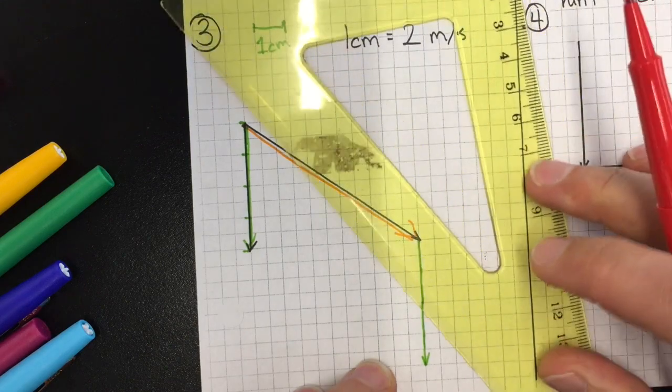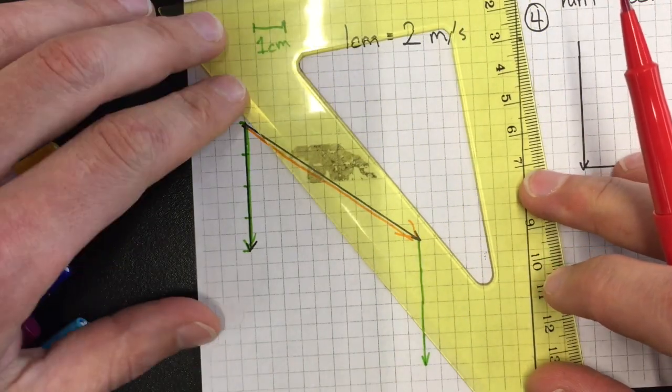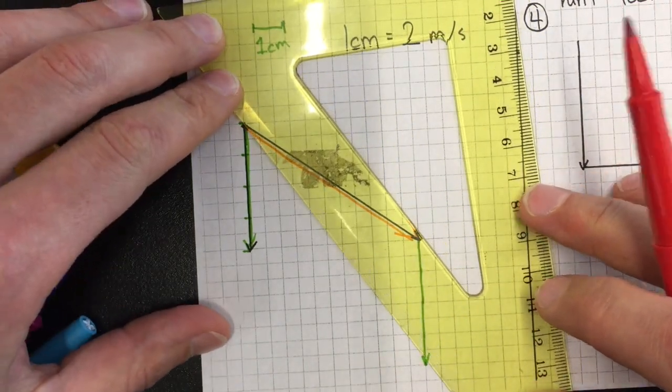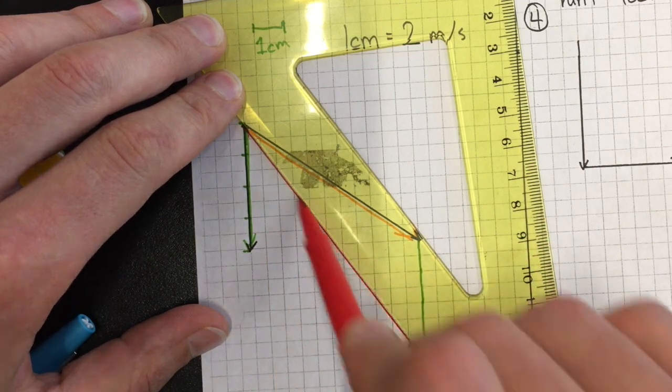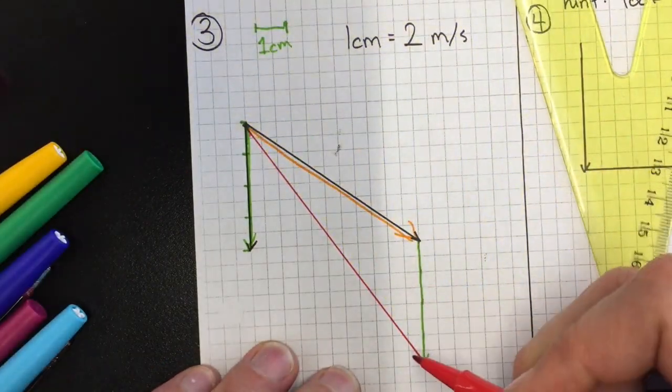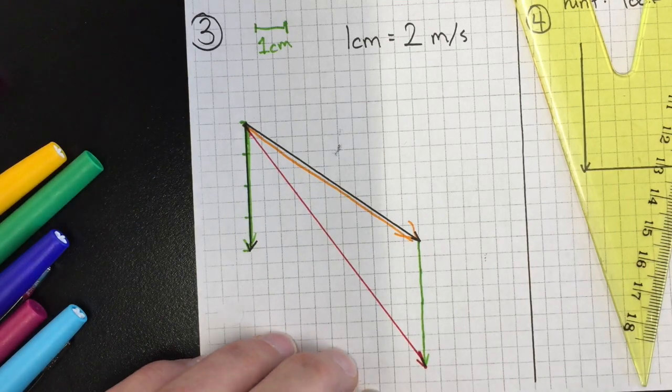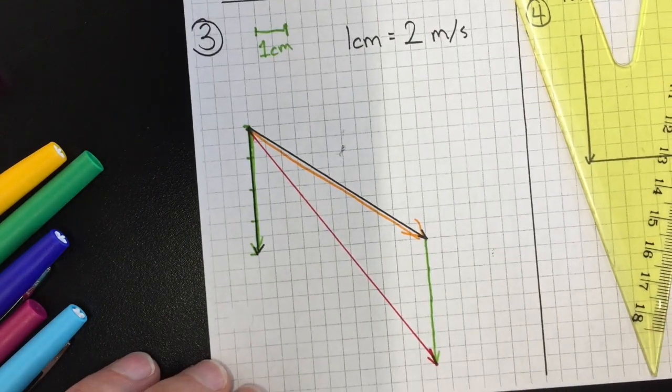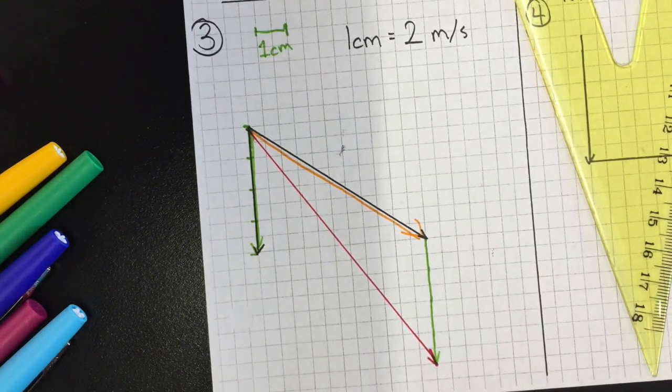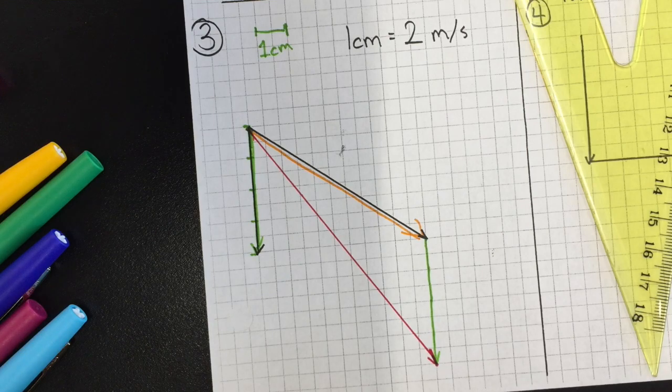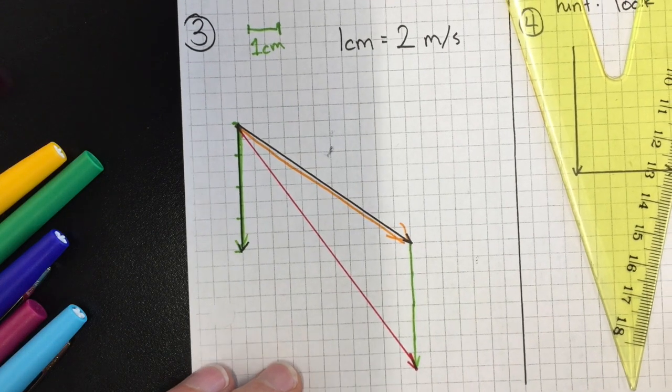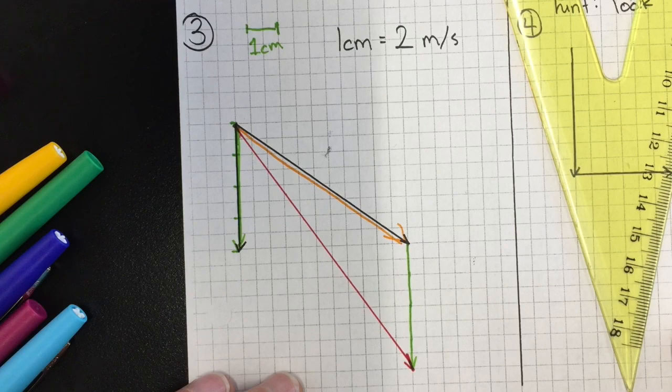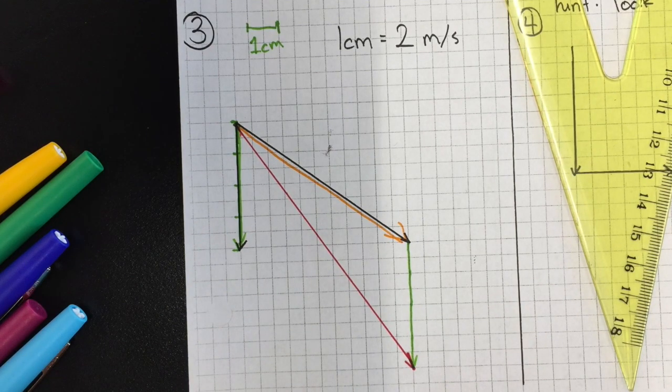So let me get a ruler. I can draw a nice straight line, and that's my resultant vector. Now there's two ways to find the magnitude. We can do that using a scale drawing, which this is drawn perfectly to scale, so I can measure the length. So let's do that first.